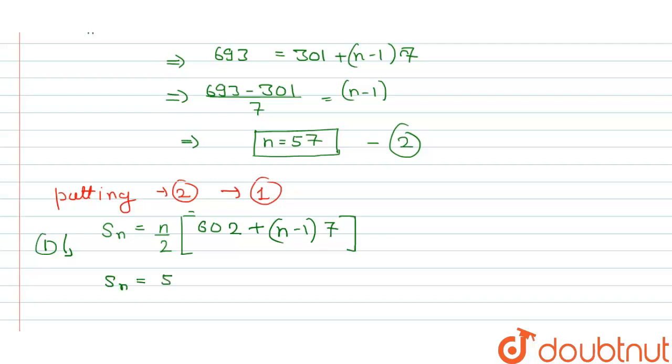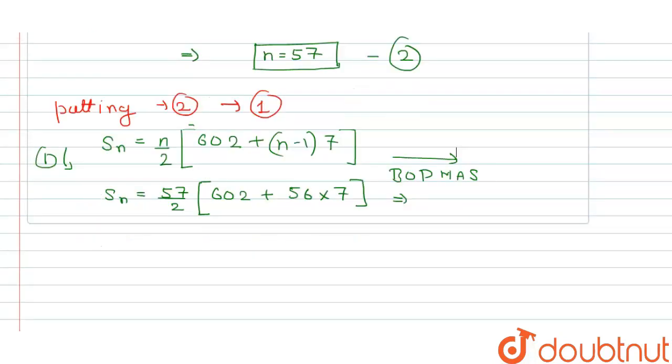When we put equation 2, it gives us Sn = 57/2[602 + 56×7]. Once you are able to do the simple algebra, apply BODMAS here: B for bracket, O for of, D for division, M for multiply, A for addition, S for subtraction. Once you apply the BODMAS rule, you will end up getting the value of Sn.